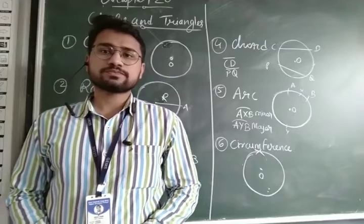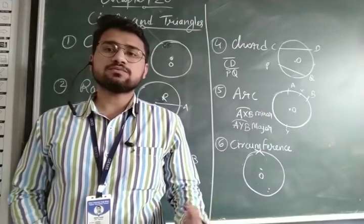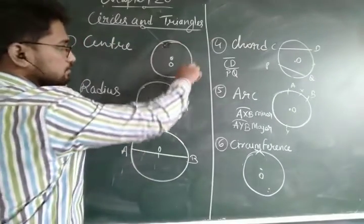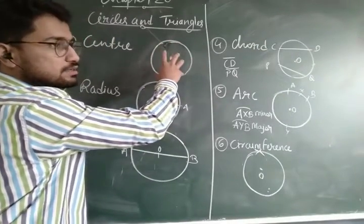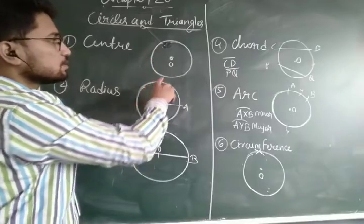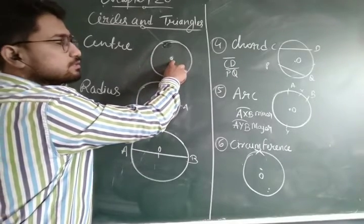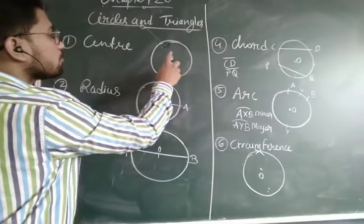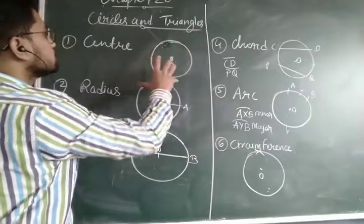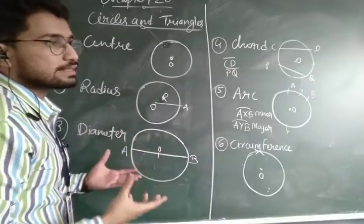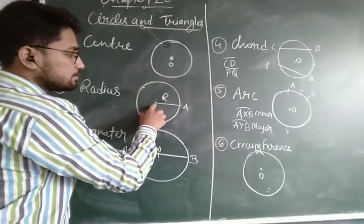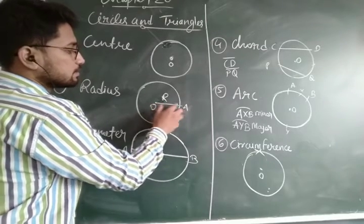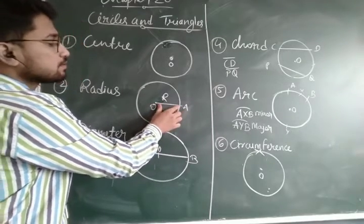First of all we will try to understand what are the different elements of a circle. A round figure which has a curve-like structure is called a circle. The big point of this figure is known as the centre of the circle. Now after knowing about the centre, what is radius? From the centre to the boundary, if you draw a line, then the measure of this line will be the radius.